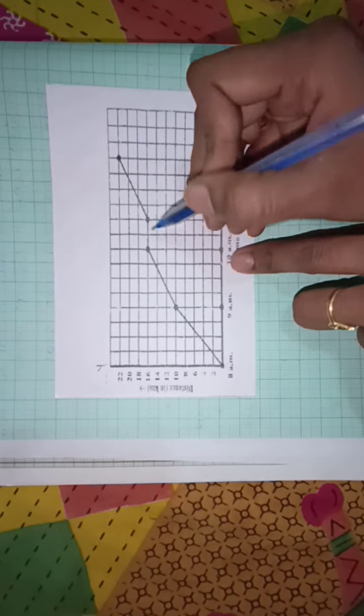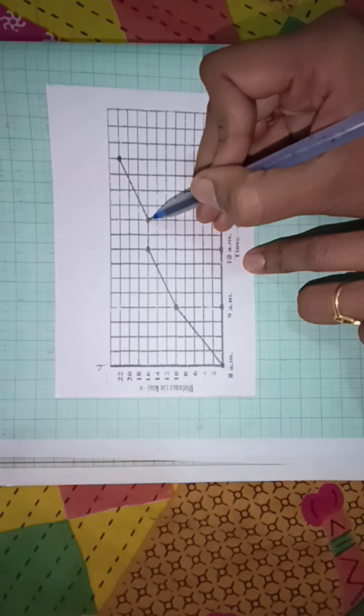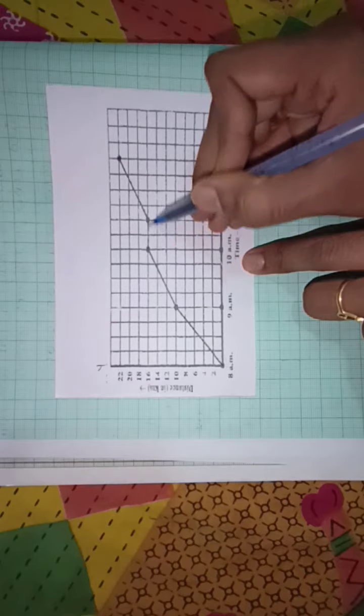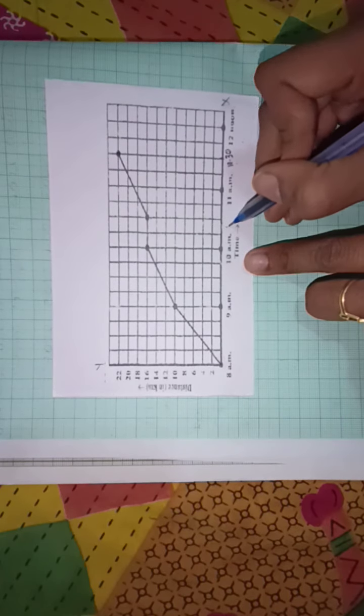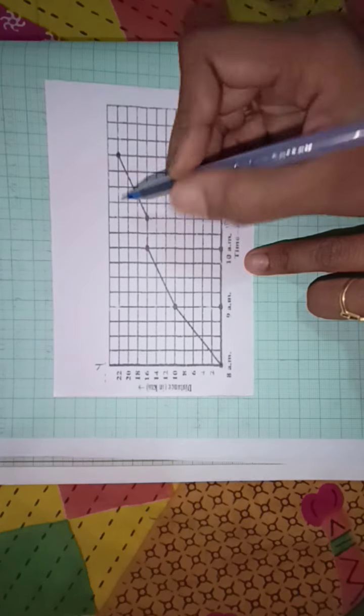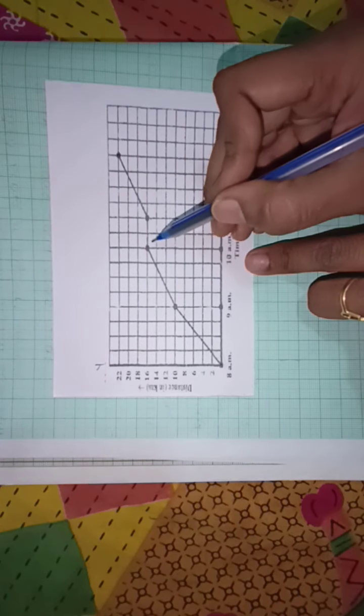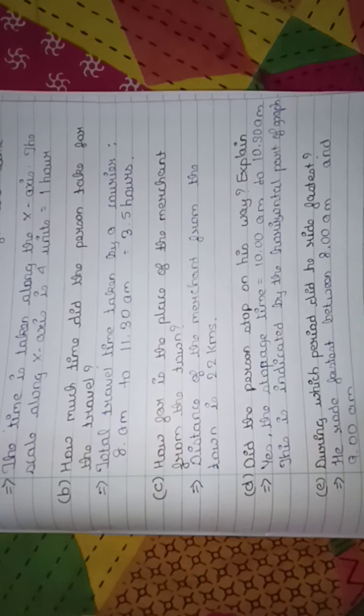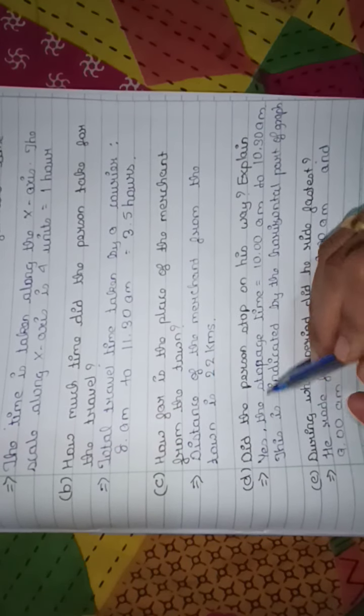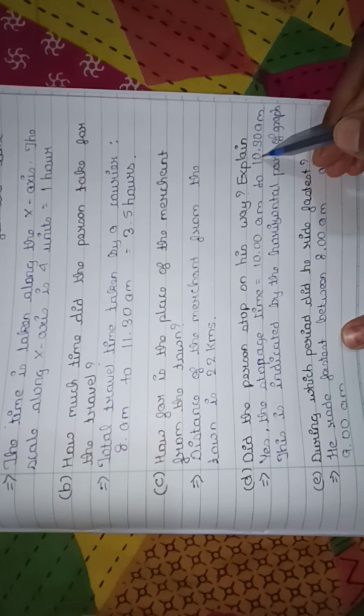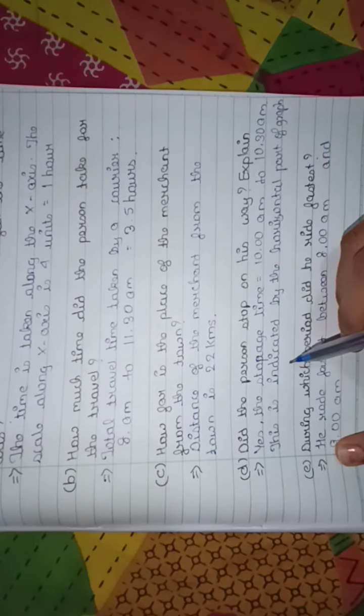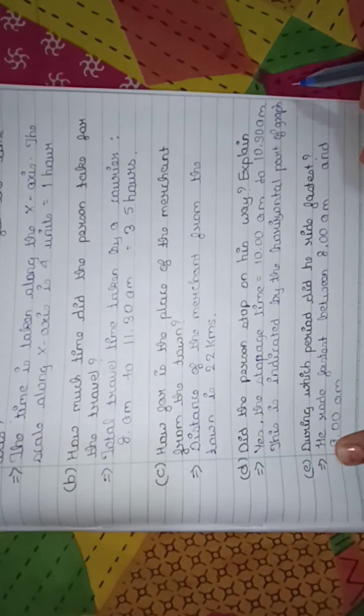That means the rest period will be from this time to this time. Here, it is 10 o'clock and here if you can see it is coming in between 10 and 11, that is 10:30. The resting period is from 10 a.m. to 10:30 a.m. Yes, the stoppage time is equal to 10 a.m. to 10:30 a.m. This is indicated by the horizontal part of the graph.